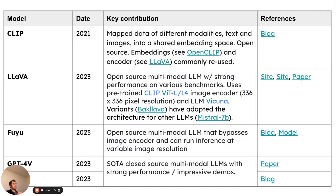LLaVA came out earlier this year — it's a really interesting open source model that builds on CLIP. It uses a CLIP image encoder with 336 pixel resolution and an LM Vicuna, which is a fine-tuned variant on LLaMA 2. Variants have been adapted for other LLMs like Mistral 7B. It's open source, you can run it on your laptop, and it gives you really interesting multimodal capabilities.